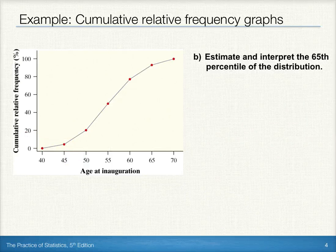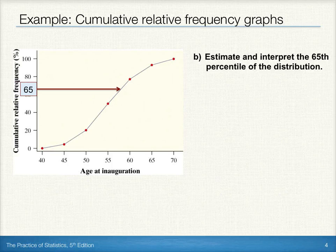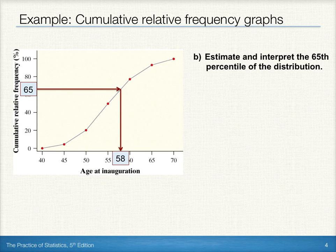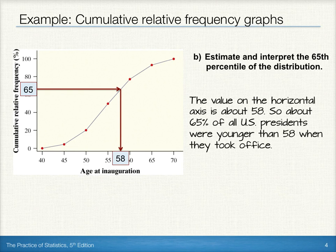Next, let's estimate and interpret the 65th percentile of the distribution. We'll start by drawing a horizontal line at 65 over to the graph. Then we'll draw a vertical line from the point of intersection down to the horizontal axis. The value on the horizontal axis is about 58. So about 65% of all U.S. presidents were younger than 58 when they took office.